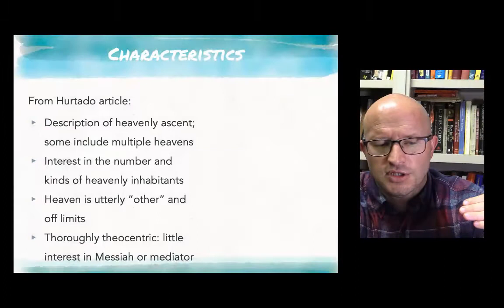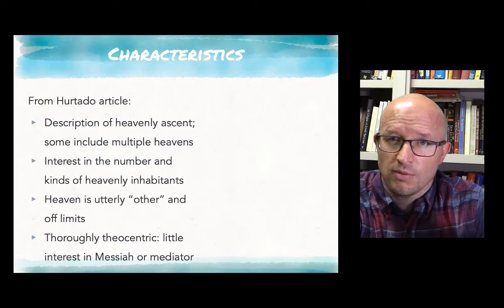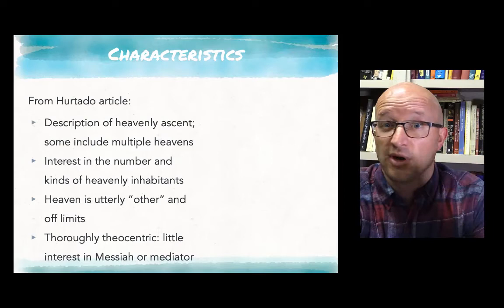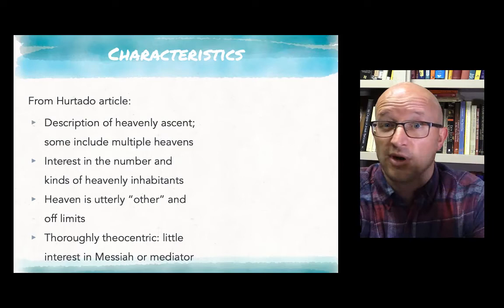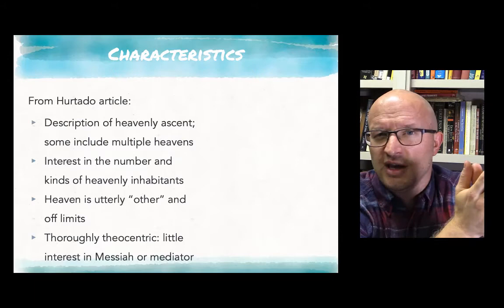With that overview of the sources of the tradition, I want to talk about the characteristics of this tradition in a synthetic way. I'm drawing here on an article by Larry Hurtado that I've provided on the course website. The first characteristic is simply that these traditions describe the heavenly ascent of a seer. Along with that first characteristic, we would note that some have an account of multiple heavens—a progressive journey from the first heaven to the second to the third, sometimes all the way to the seventh, eighth, or ninth heaven. This tends to emphasize both the complexity of heaven, its otherness from human reality, and perhaps the accessibility or otherness of God.